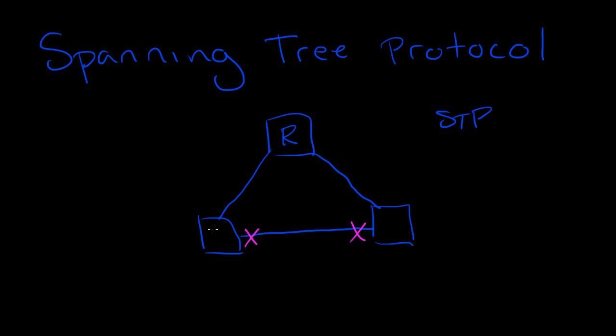So if this switch, switch A, needs to talk to switch B, he's going to send his traffic through the root rather than directly across. And while this may seem like a longer path, the advantage is that we don't have loops.